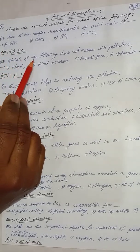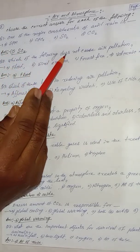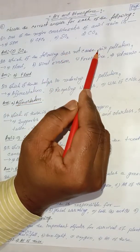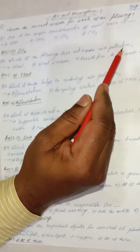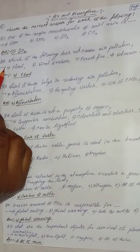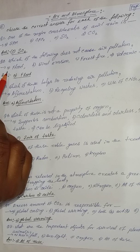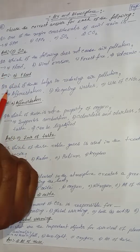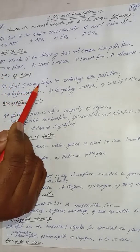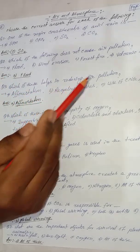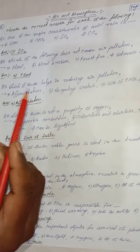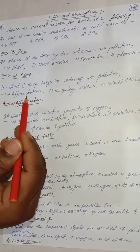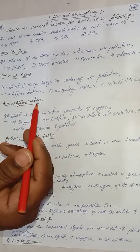Next question: which of the following does not cause air pollution? The correct answer is option A — flood. Next question: which of these helps in reducing air pollution? The correct answer is option A — afforestation.